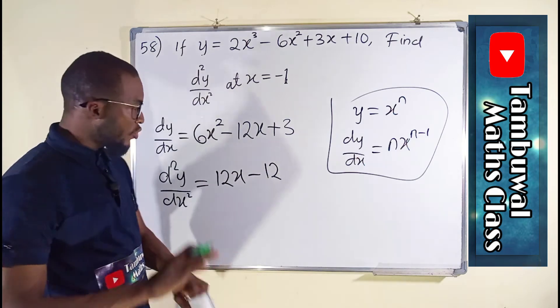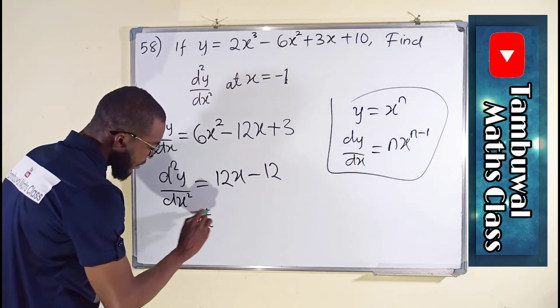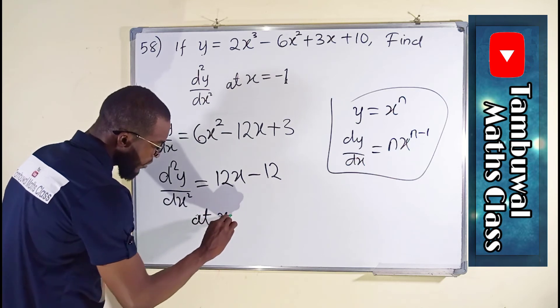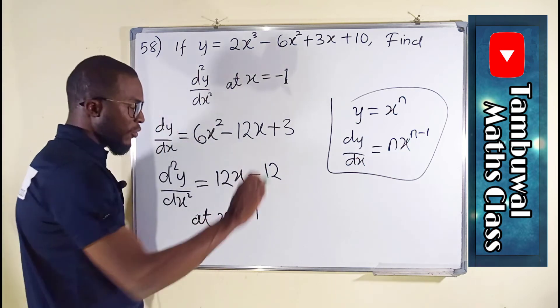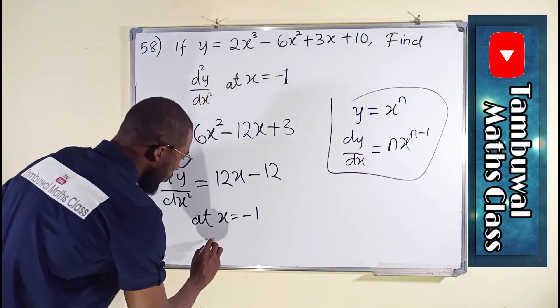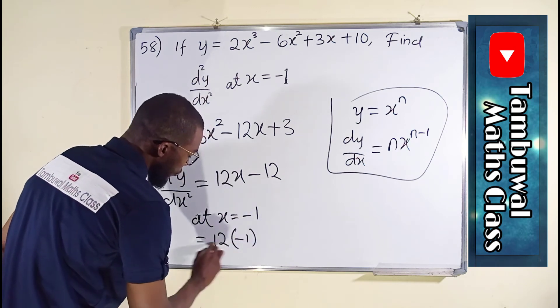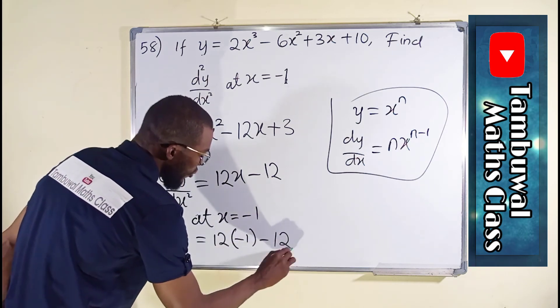But it says at x equal to negative 1, so we are going to substitute the value of x here. So it will be 12 multiplied by negative 1 minus 12 also.